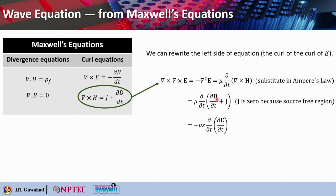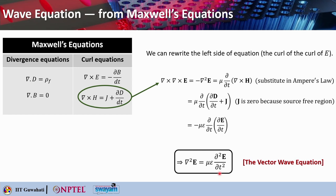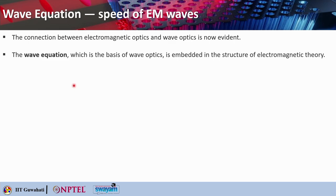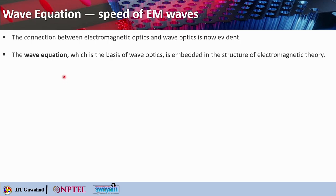Since ε is a constant, it can be taken out of the derivation, giving ∂²E/∂t². This means we obtain ∇²E equals με ∂²E/∂t², which is the vector wave equation. The connection between electromagnetic optics and wave optics is now more evident: the wave equation, which is the basis of wave optics, is embedded in the structure of electromagnetic theory.